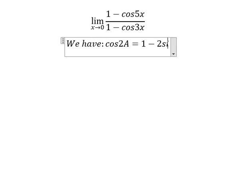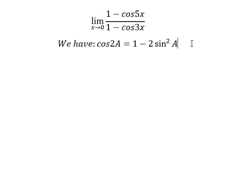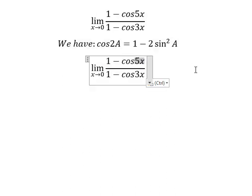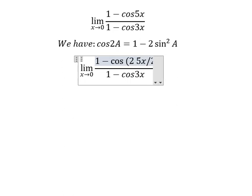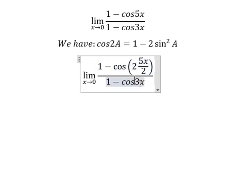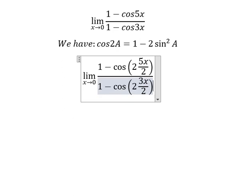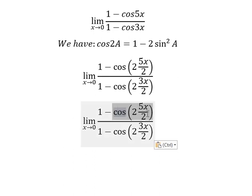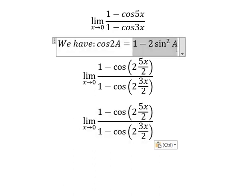...minus 2 sine x squared. We need to know that 5x over 2 corresponds to one part, and 3x over 2 corresponds to the other part. Now we need to transform these expressions accordingly.